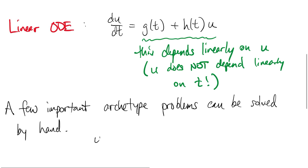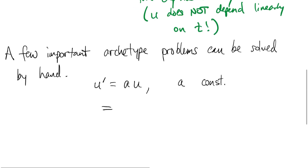The most important example of this type is u' equals au for a constant a. The solution is just an exponential function e to the at, which you can easily check by plugging it in.